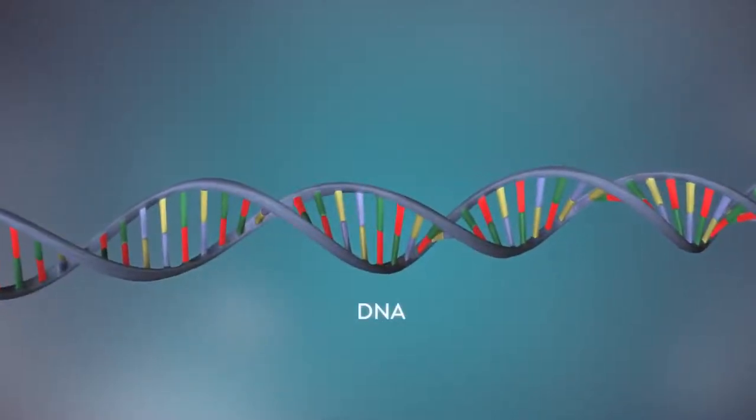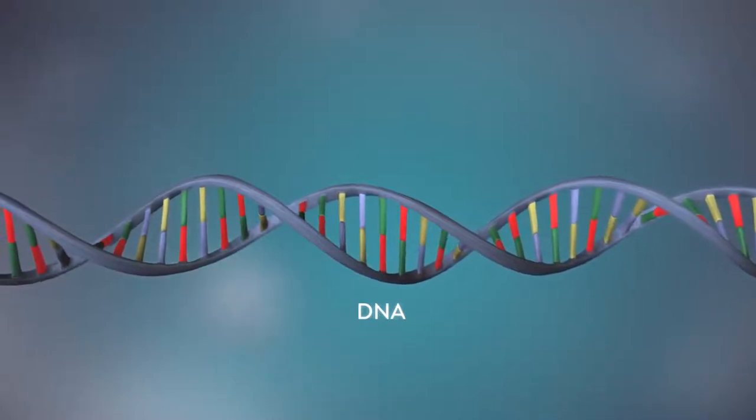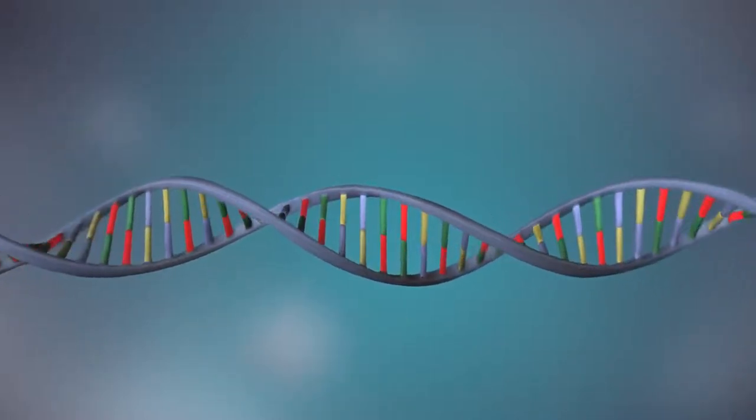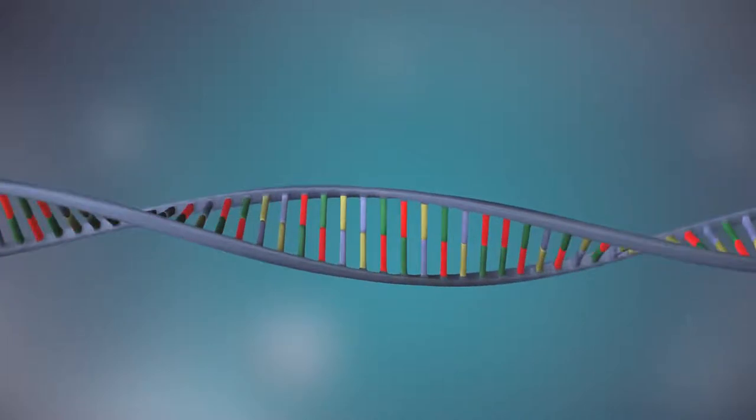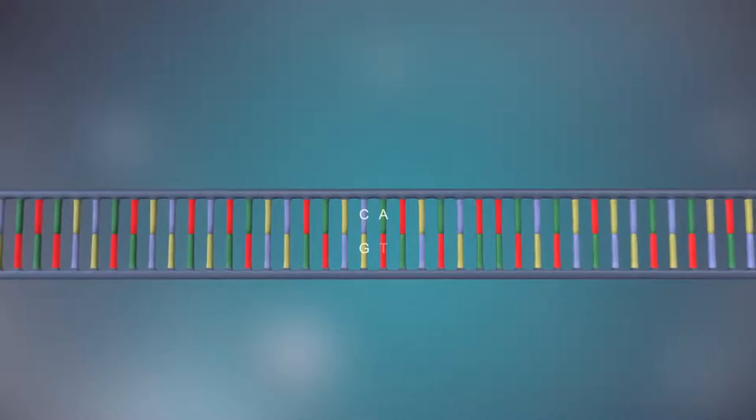DNA is a molecule made up of two strands twisted around each other in a double helix shape. Each strand is made up of a sequence of four chemical bases represented by the letters A, C, G and T.